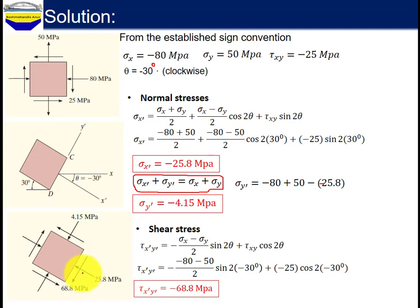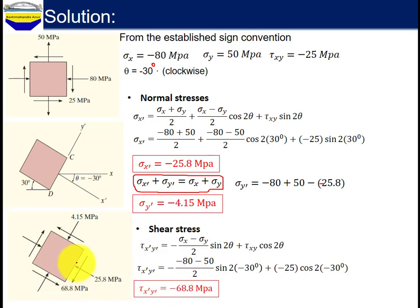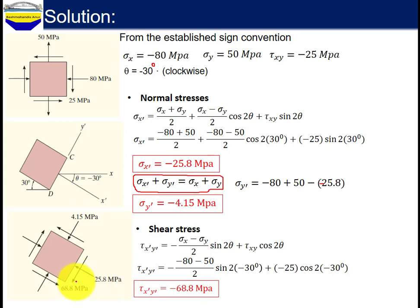Therefore, the new state of stress looks like this. Sigma x-prime, sigma y-prime, and tau x-prime y-prime are shown on the element rotated 30 degrees. The state of stress gives sigma x-prime equals negative 25.8 MPa, sigma y-prime equals negative 4.15 MPa, and tau x-prime y-prime equals negative 68.8 MPa.